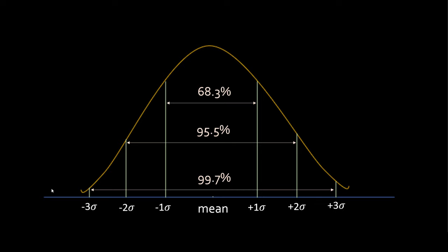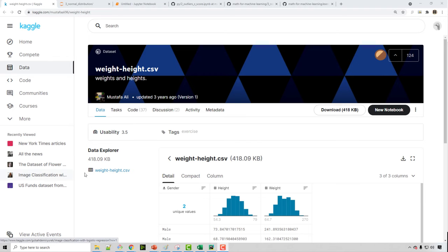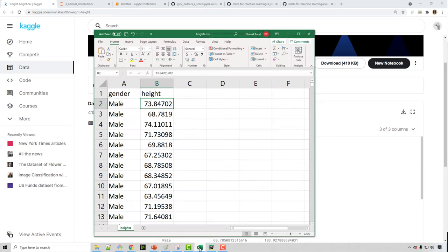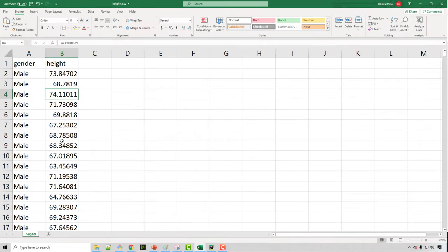Sometimes when data points are few, people use two standard deviations as well, so it's a matter of using judgment as a data scientist to figure out the correct threshold. What we'll do now is some Python coding — we'll use standard deviation to remove outliers from our dataset. I downloaded a Kaggle dataset as a CSV file containing people's heights, and I've removed the weight column, leaving 10,000 height data points loaded into my Jupyter notebook.